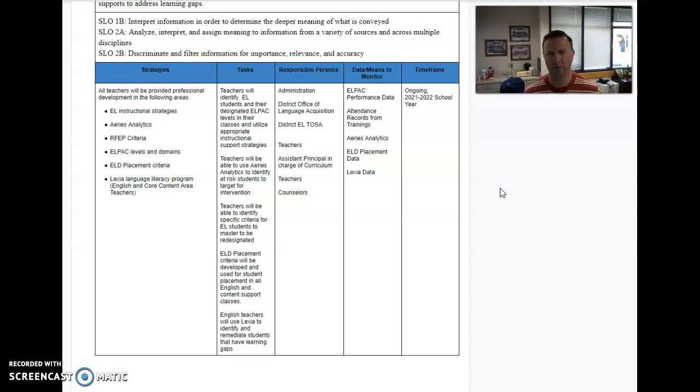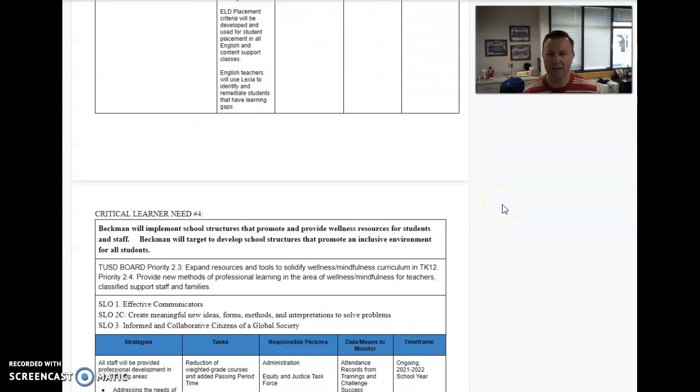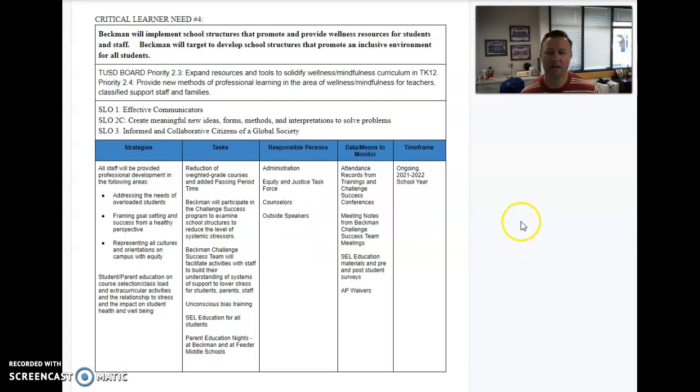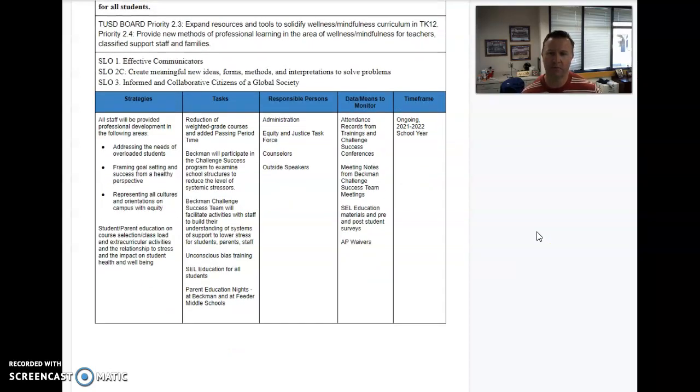So, again, if you have questions on that, there'll be more answers coming later. And then last, let's see. So this is critical learning need 4. A lot of this has to do with some challenge success items. But it also talks about some social justice type stuff. And you've seen actually on Wednesday of last week, the tutorial that was dealing with social justice and equity.